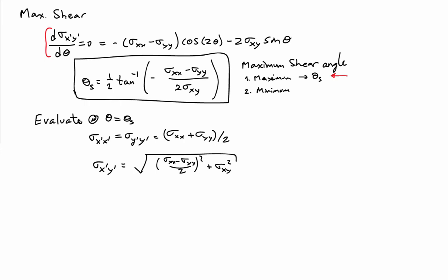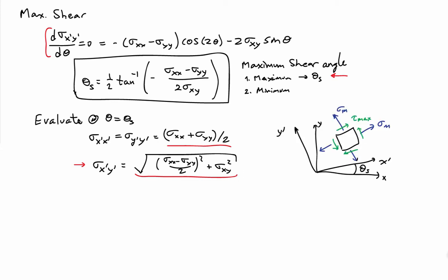Plugging back in the transformation laws and evaluating them for theta_s, I find that the normal stress in the maximum shear frame is the same in both directions — it's the mean value, (sigma_xx + sigma_yy)/2. The shear stress in this coordinate frame, which is the maximum value tau_max, is equal to that radical we had when calculating principal stresses. Drawing the stresses in the maximum shear frame, we end up with equal normal stresses sigma_mean in both x' and y' directions, and tau_max acting on the x'y' faces.